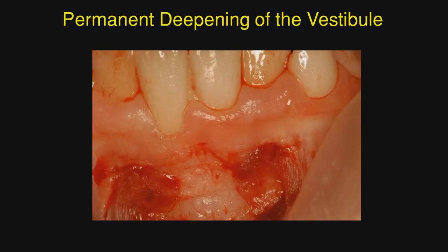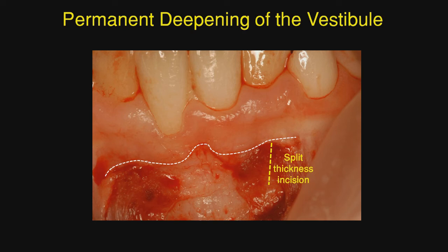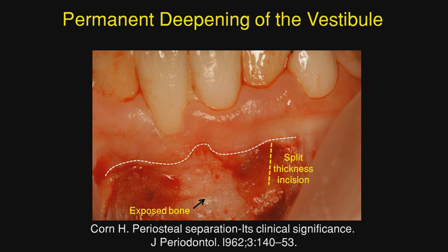Next is the technique by Herman Korn. He made a split thickness incision at the mucogingival junction — split thickness for about five millimeters — and then significant bone was exposed in that area. When bone is exposed, it scars over and you get permanent deepening of the vestibule. This was published by Dr. Korn in the Journal of Periodontology in 1962.